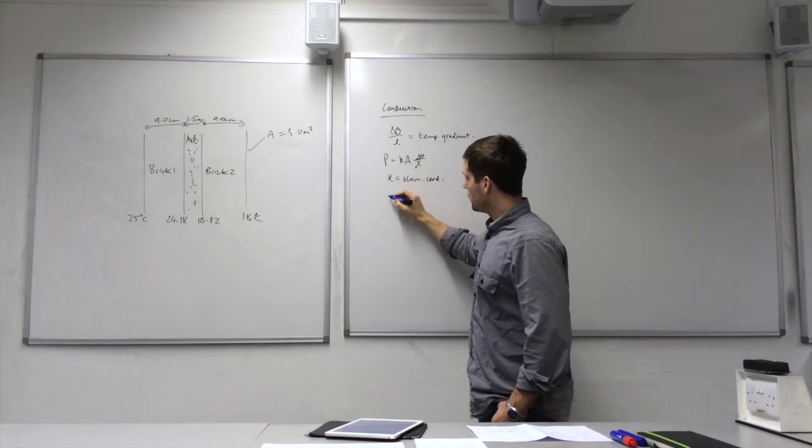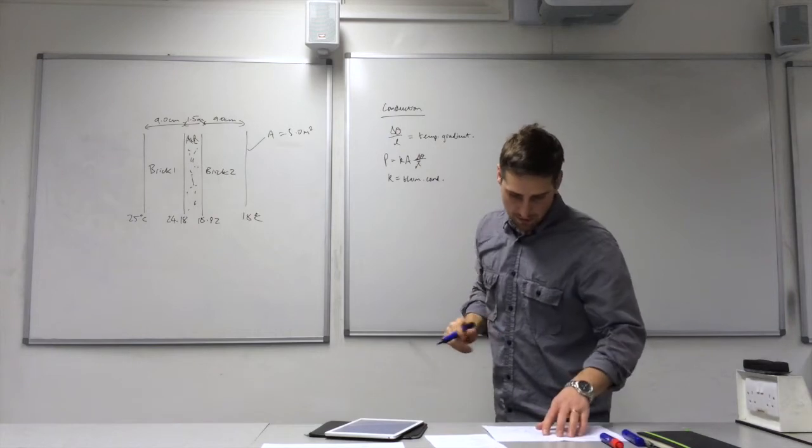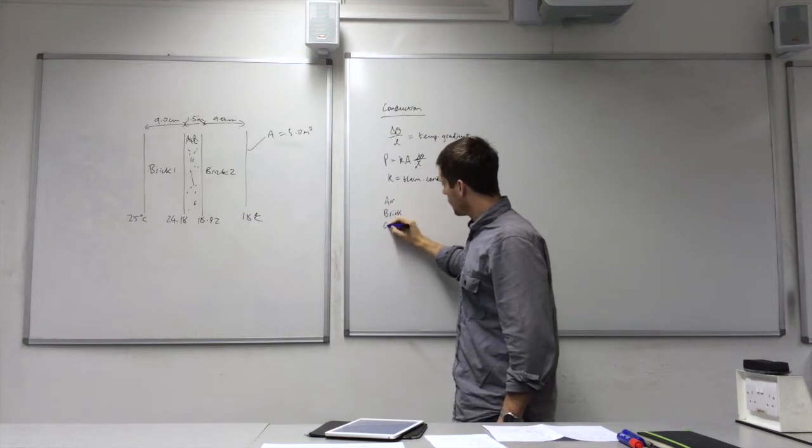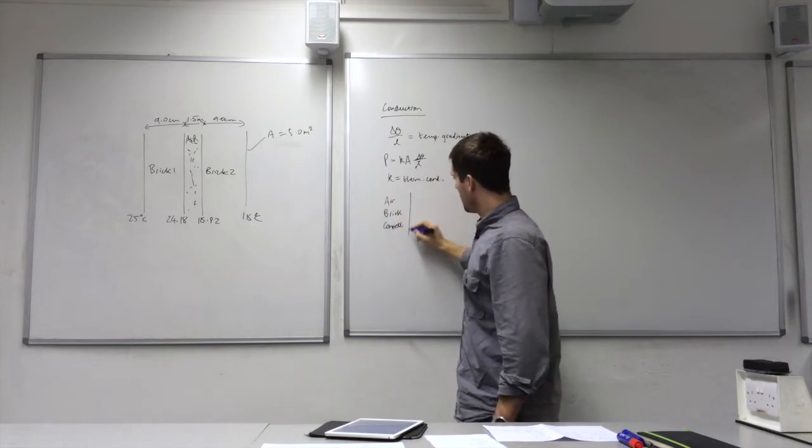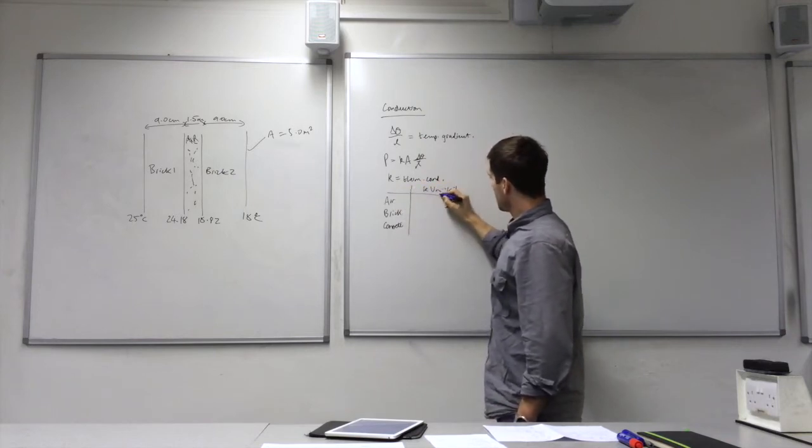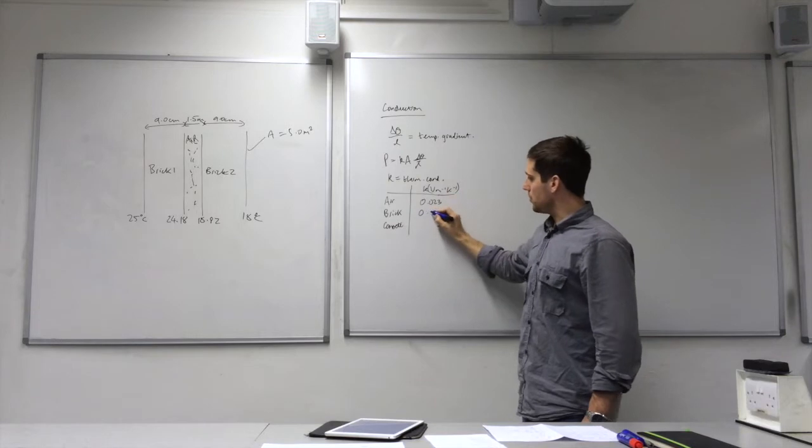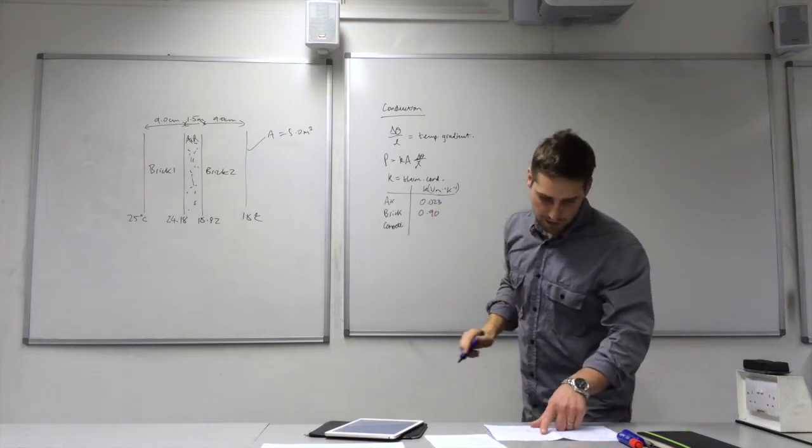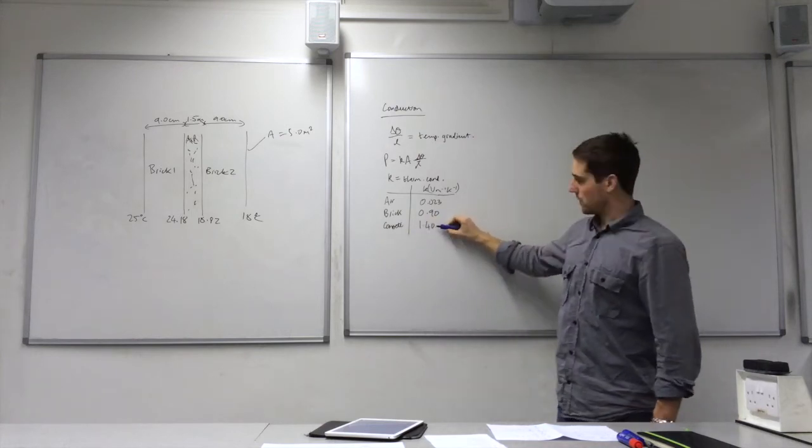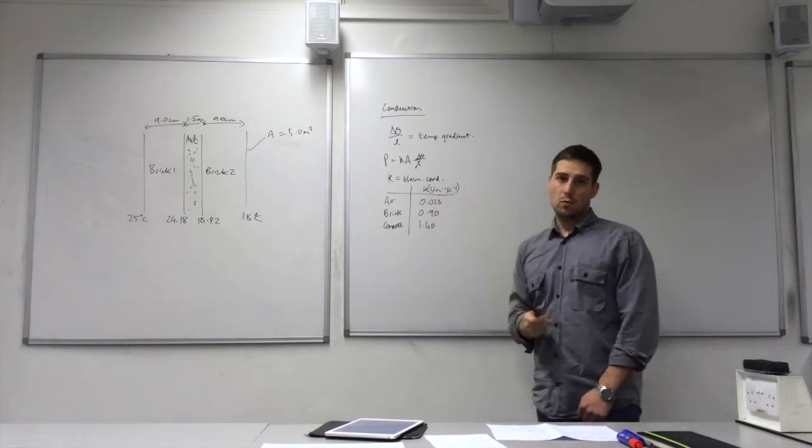Those values for different materials. So this is the inputs, I'll just give you three. Air, brick and concrete. This is the K watts per meter Kelvin. Air is 0.023, brick 0.90, and concrete 1.4. So these values tell you that concrete is a better conductor than these two, and air is the best insulator, worst conductor.